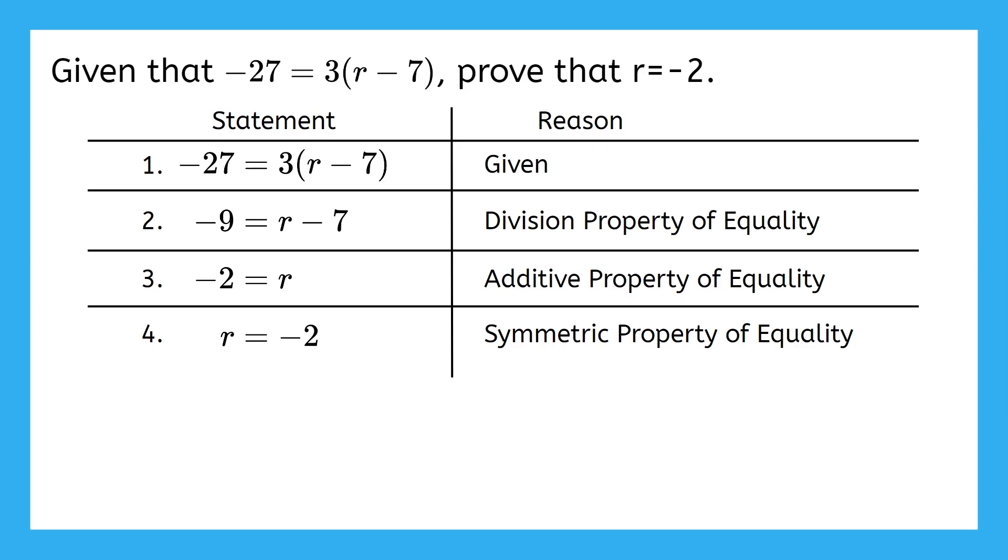Just because this version is shorter doesn't necessarily make it better, especially if it's only 1 or 2 lines difference. Mathematically, as long as your work is in a logical order and you can justify each step, that is okay. Of course, if a proof can be done in 4 lines and yours is 20 lines, well, maybe that's a sign that it could be helpful to brush up on your skills to make yourself more efficient.